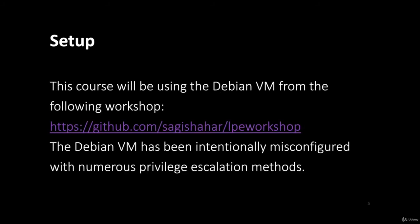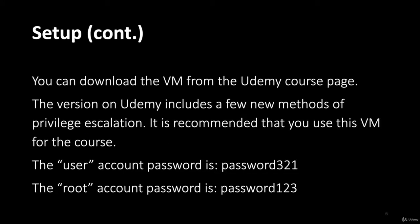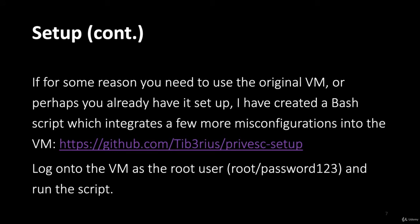We will be using a vulnerable Debian VM for the course, which was created as part of a local privilege escalation workshop, not affiliated with the course. The VM is special in that it contains multiple misconfigurations which allow privilege escalation. You can download the VM from the Udemy course page — this is recommended as this version has a few new methods of privilege escalation which I configured. The low privileged user account password is password321. The root user account, which you can use if you need to configure the VM or reset something, uses password123. However, if you've already got the Debian VM set up because you tried out the workshop before, you can download a bash script I wrote from the URL on the screen, and as long as you run it as the root user, it should perform all the extra misconfigurations.